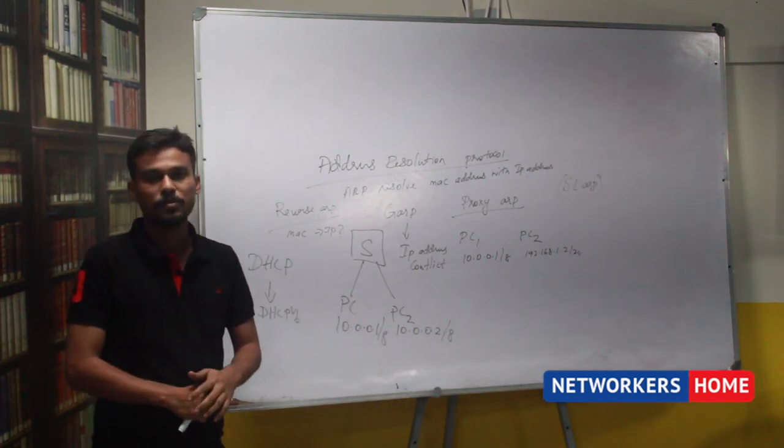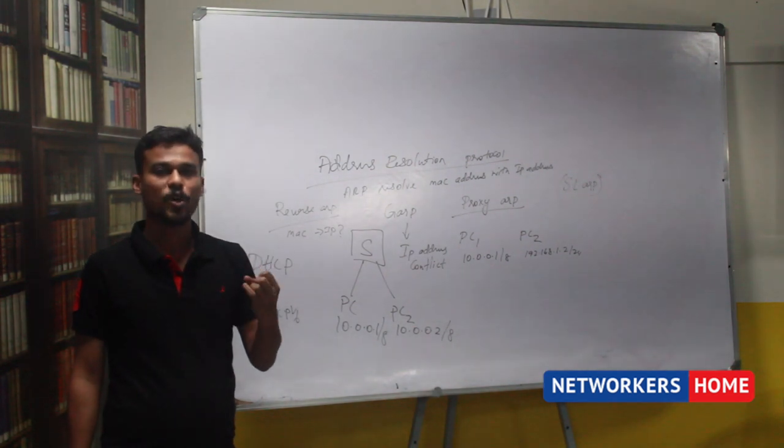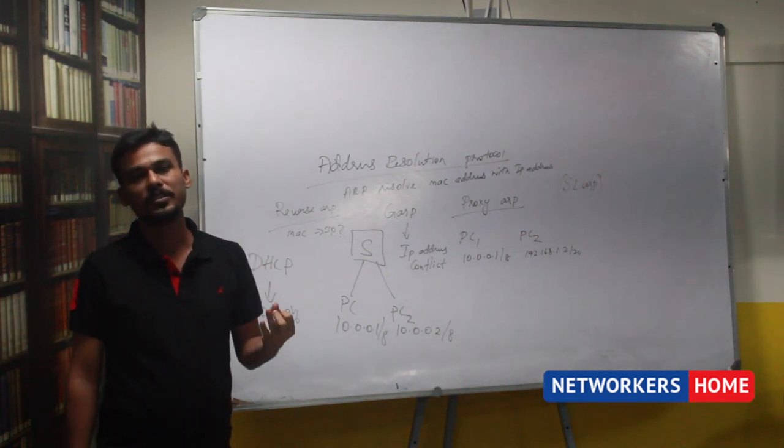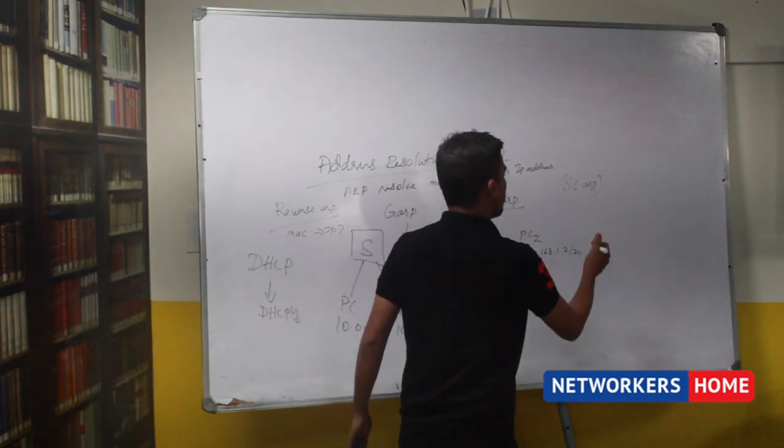I will concise the information. ARP is running under layer 2. The types of ARPs are proxy ARP, reverse ARP, GARP, inverse ARP I left. What about inverse ARP?